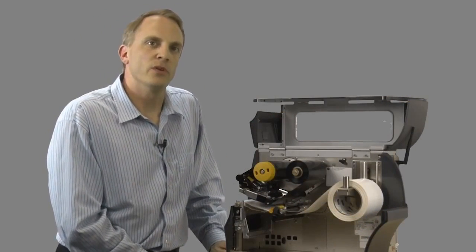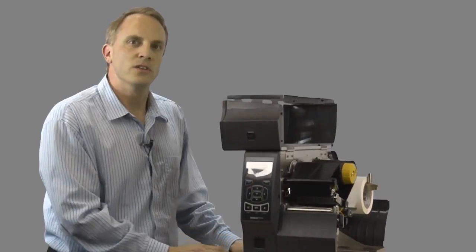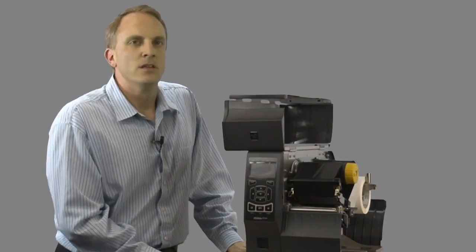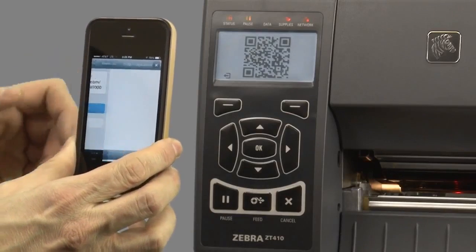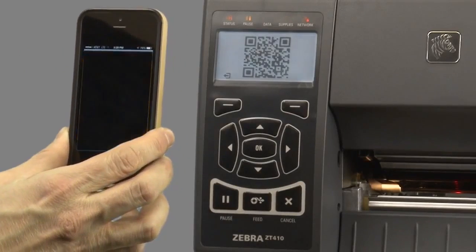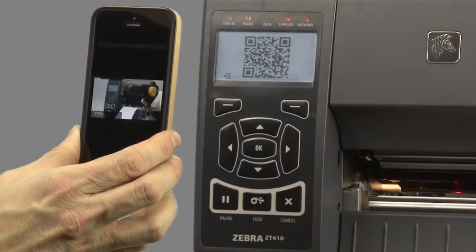The ZT400 boasts a new intuitive user interface, including a sealed keypad for easy cleaning and easy to interpret status indicators. Dynamic QR codes are assigned to the printer error states, which enable the user to access direct web content, including videos and tech support documentation via scanning with a typical QR code application on your smart device.